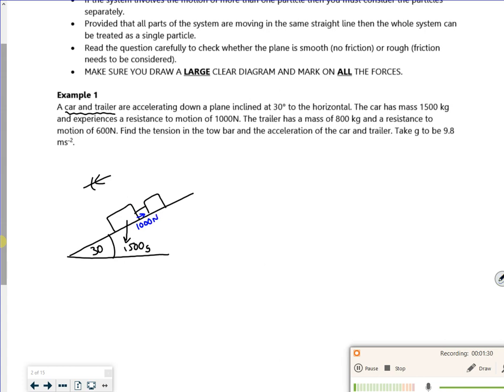Then it says the trailer has a mass of 800 kilos, so 800 kilos going down, so 800g, and a resistance to motion of 600 newtons. So it says find the tension in the tow bar, so remember I've got these T's, tensions going in opposite directions, and find the acceleration.